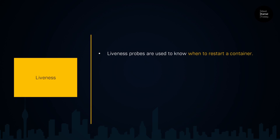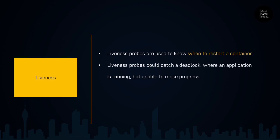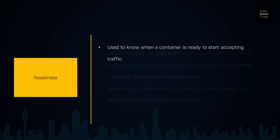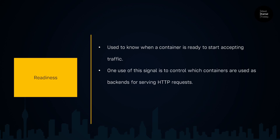Liveness probes are used to tell the environment when to restart a container. For example, in cases like deadlock scenarios, it is possible to fix the application by restarting it. Readiness probes can be used to let the container orchestrator or Container Apps environment know that the container is ready to start accepting traffic. One use of this signal is to control which containers are used as backends for serving HTTP requests. When a container is not ready, it is removed from the load balancers.